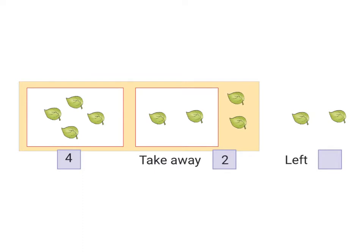Let's look at another example. There are how many leaves in this box? Let's count. 1, 2, 3, 4. So there are 4 leaves in this box. Now let's take away 2 leaves. That is 1, 2. So we take away 2 leaves from the box.